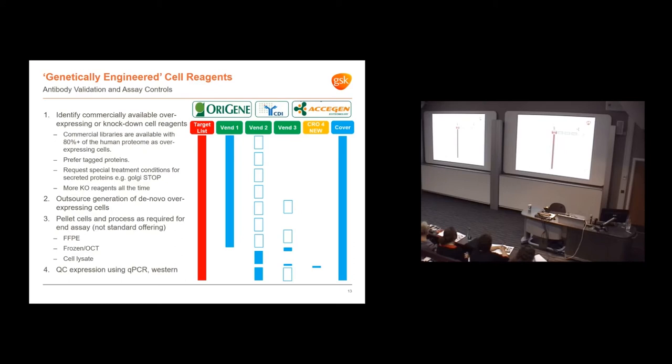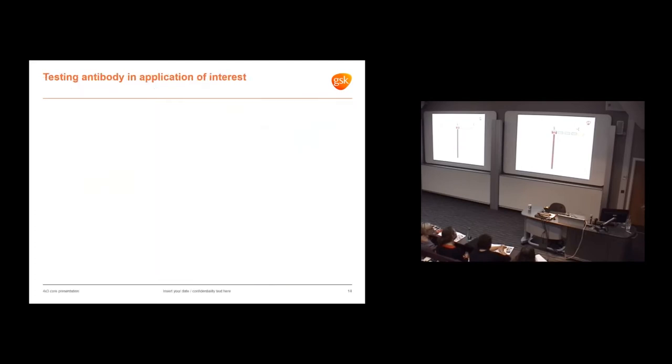If we have a long list of targets, we can go to various vendors until we've got complete coverage of that target list with cell reagents. One issue we have is that many of these overexpression cell clones have variable expression levels, so they're not necessarily all producing sufficient protein to be detected.